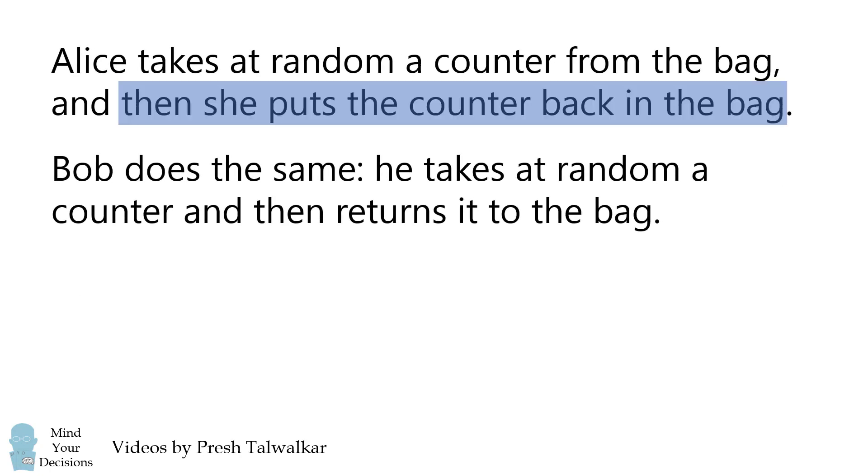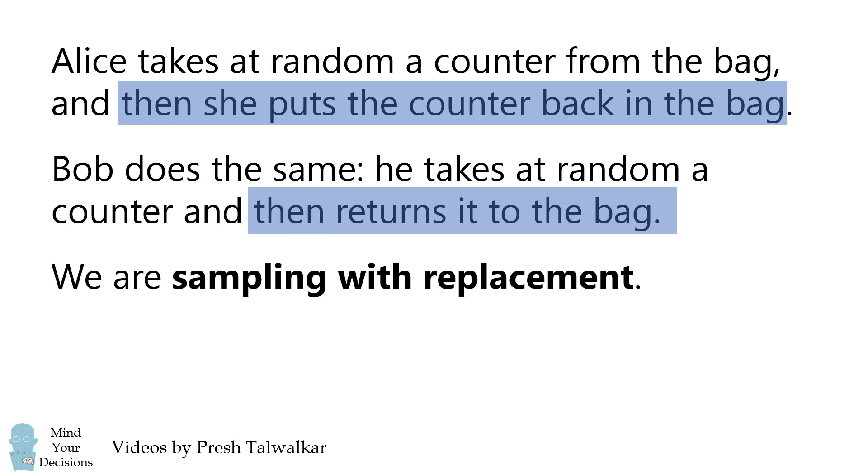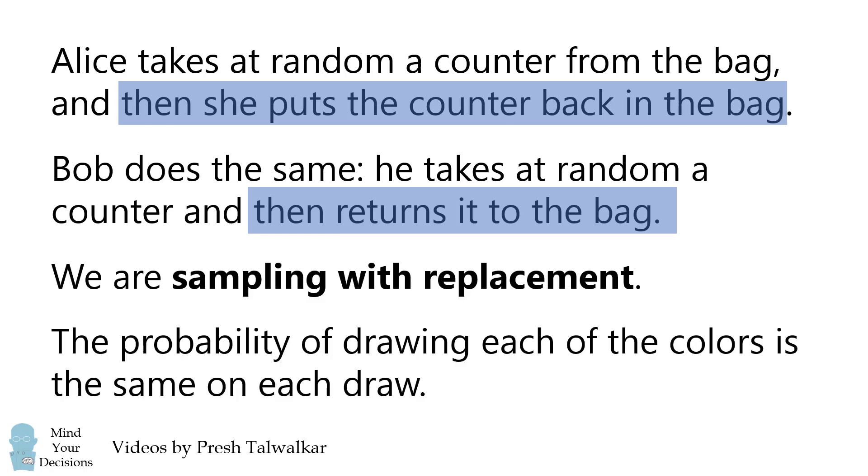Notice that Alice takes a counter and then puts it back in the bag, and Bob does the same thing. These details indicate we are sampling with replacement. The probability of drawing each of the colors is the same on each draw.